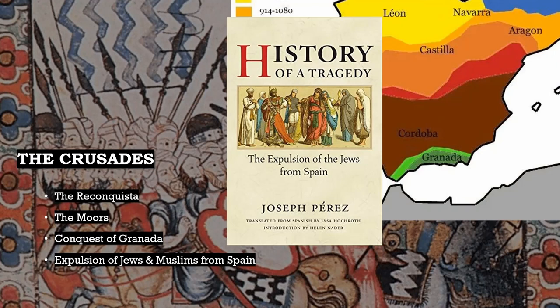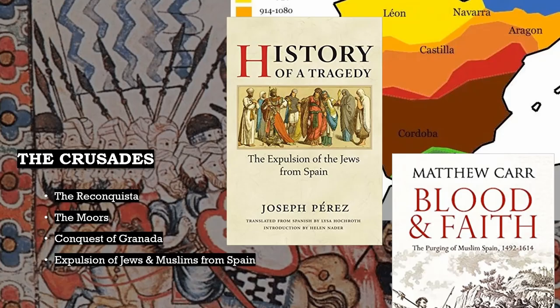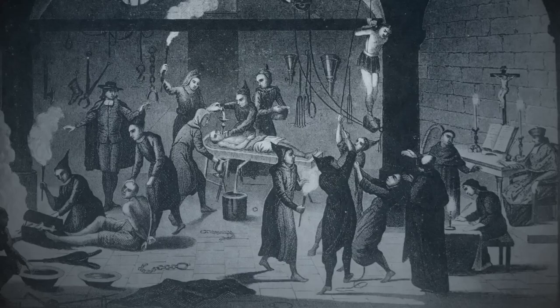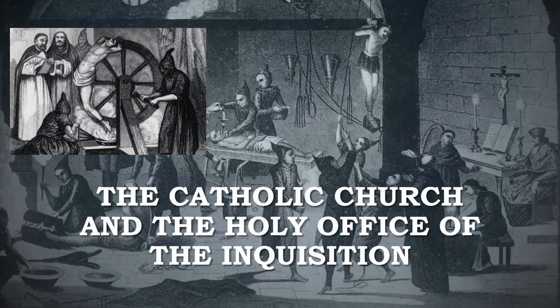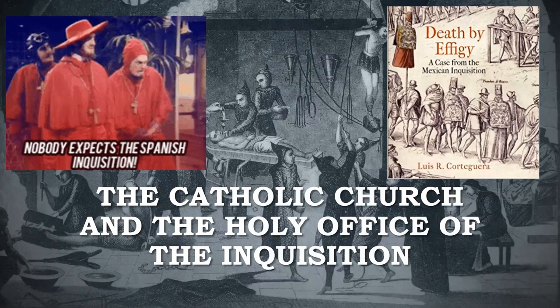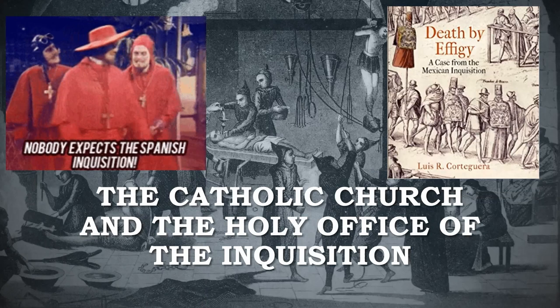The crown initiated policies to expel Muslim Moors and Jews from Spain who refused to convert to Catholicism. The Iberians also utilized the Catholic Church's holy office of the Inquisition to persecute and torture suspected heretics. After the Spanish conquest of the Mexica, the Inquisition would also be brought to Mexico, which by then was known as New Spain. The Spanish crown not only sought to expand its territory, but also made sure to get rid of those who refused to conform to its institutions and beliefs. In sum, this period was characterized by a spirit of religious fervor and violent conquest.